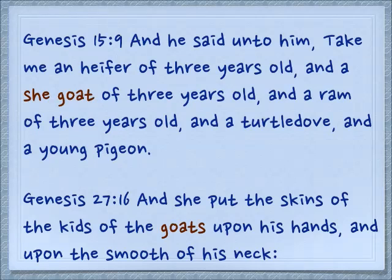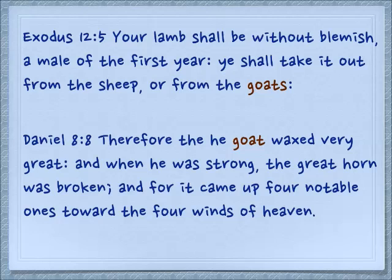In Genesis 27:16: 'And she put the skins of the kids of the goats upon his hands, and upon the smooth of his neck.' Here Rachel is trying to disguise Jacob to feel like Esau — remember Isaac cannot see well, but he's going to feel him. Goats have long hairy fur, as opposed to sheep which have wool. In Exodus 12:5: 'Your lamb shall be without blemish, a male of the first year. Ye shall take it out from the sheep or from the goats.' This is interesting because we always think the Passover is a Passover lamb, but in those days you could use a goat for that sacrifice.